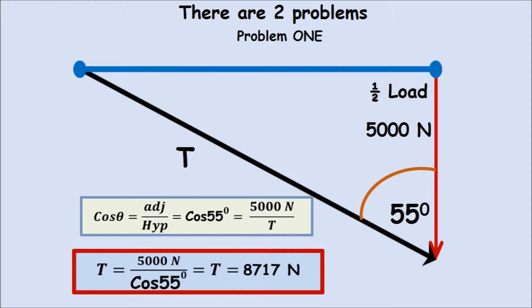You can see at 55, it's very close to the load. It's 8,717 newtons, and that would be on each chord. So that's pretty dramatic. You have over 17,000 newtons of stress, of tension in both chords holding up a 10,000 newton object, and as that angle changes, so will the tension.